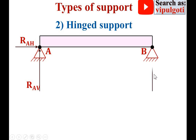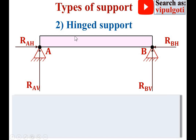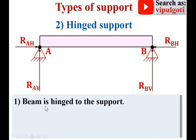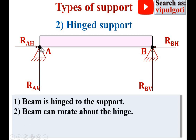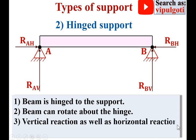Similarly for end B of the beam, there are vertical and horizontal reactions. RBV means reaction at point B in the vertical direction, and RBH is the reaction at point B in the horizontal direction. Important notes for hinge support: the beam is hinged to the support; the beam can rotate about the hinge; and both vertical and horizontal reactions can develop at the ends of the beam.